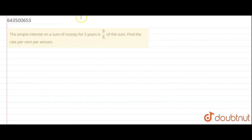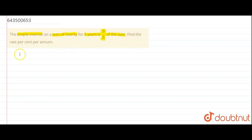The question states that the simple interest on a sum of money for 5 years is 3/5 of the sum. Find the rate percent per annum.